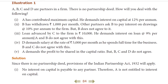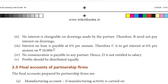Third subdivision. Loan advanced by C to the firm is Rs. 10,000. He demands interest on loan at 9% per annum. A and B do not agree with this. As per the Act, interest on loan is payable at 6% per annum. Therefore, C is to get interest at 6% per annum on Rs. 10,000.